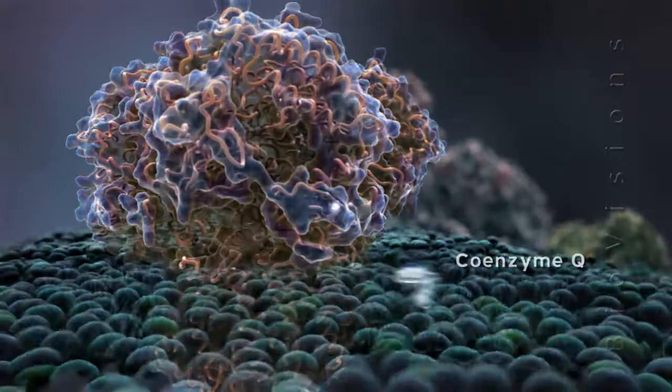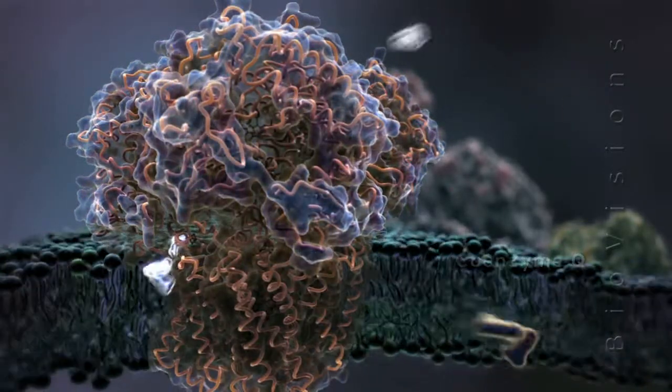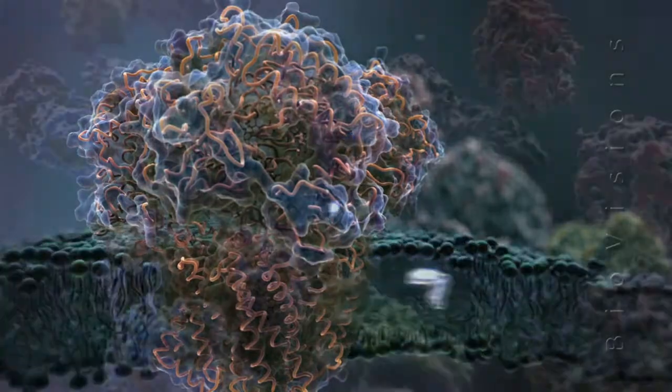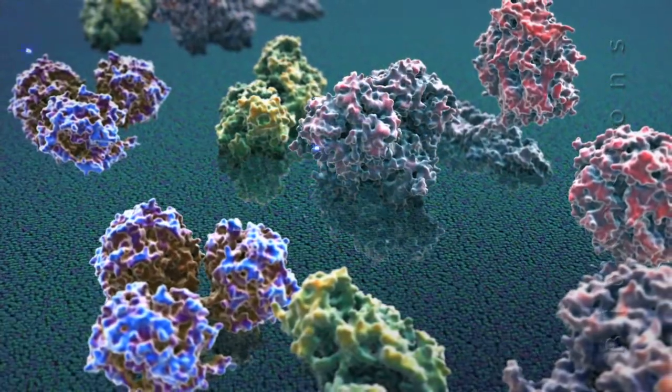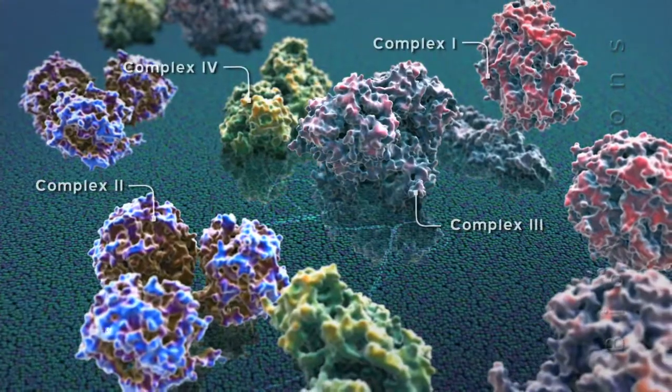The lipid-soluble coenzyme Q is reduced by electrons harvested from complexes 1 and 2 and then diffuses through the inner membrane, transferring its electrons to complex 3.